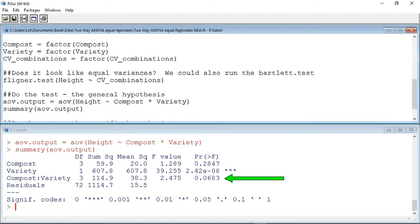The third line contains the interaction between compost and variety. As we can see, this value is 0.0683, which is above our 0.05 transition value, suggesting there is no interaction between compost and variety.